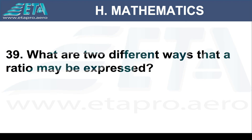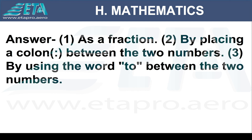What are the different ways that a ratio may be expressed? One, as a fraction. Two, by placing the colon between the two numbers. Three, by using the word 'to' between the two numbers.